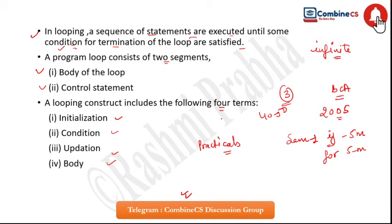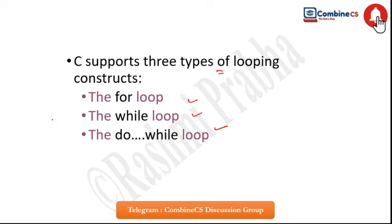For a 5-mark university question, you can give a simple example — state the problem, explain how it is overcome using looping, give the definition of looping, and cover the theory. If you write your answers this way, you will never fail in university exams. This is how you need to write for university.